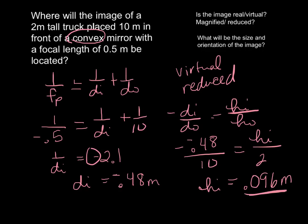And since it's virtual, it will be an upright image. We also know that, because our HI is positive, so it's upright. And that would be everything. So these are the same basic ideas that we're going to be applying to all of our mirror calculations.